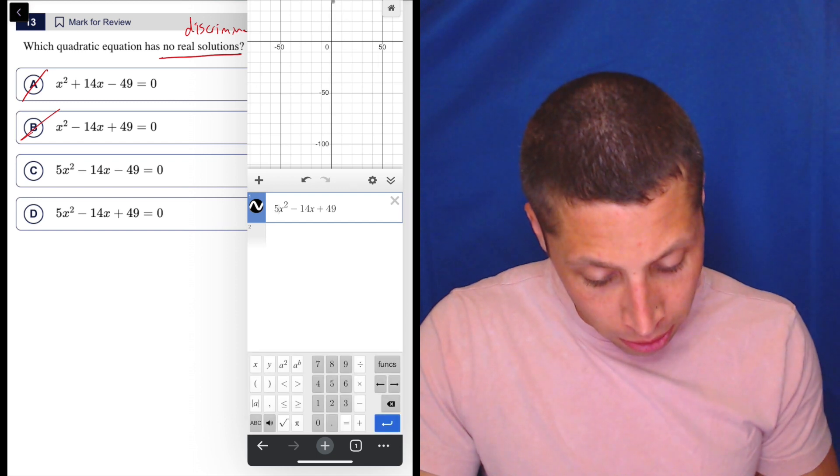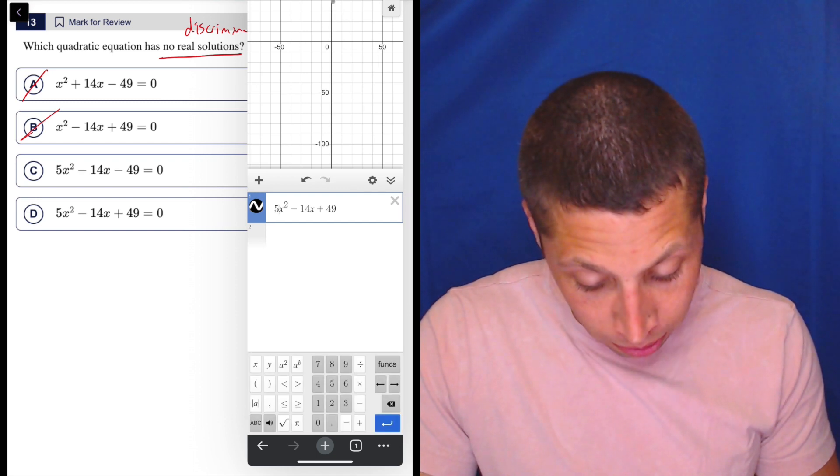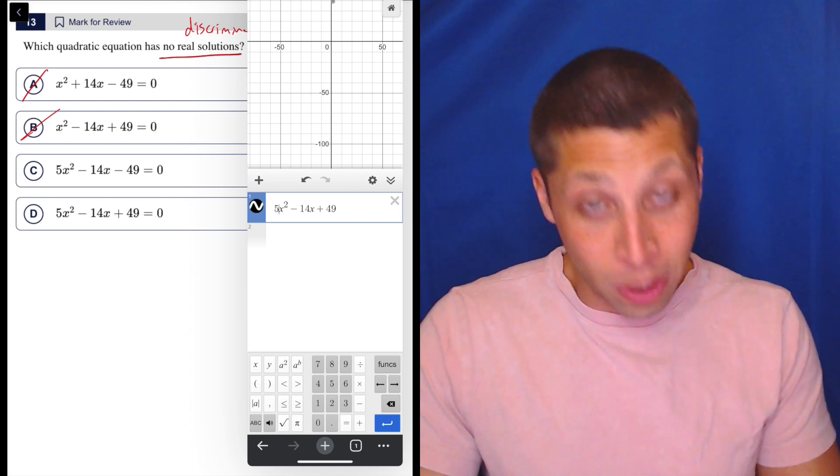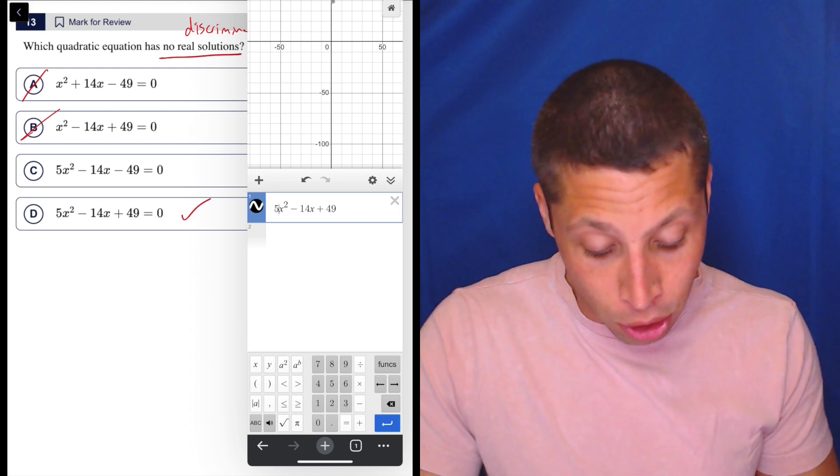Now we can come over here and do five minus 14x minus four, this is choice d. Choice d looks like it is no solution. So that seems good, right?